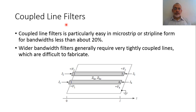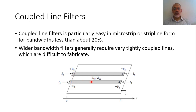Coupled Line Filters are particularly easy to implement in microstrip or stripline forms for bandwidths less than about 20%. A wider bandwidth filter generally requires very tightly coupled lines, meaning the spacing between the two coupled lines would be very small, which is not practically implemented and difficult to fabricate effectively.